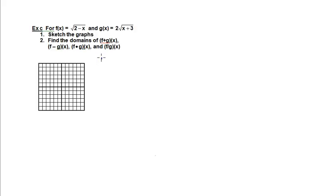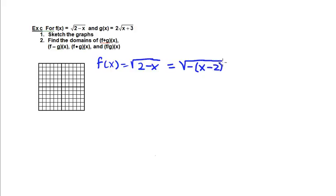For our first function f of x equals square root of 2 minus x, we need to transform this. First, factor out the negative sign inside so it becomes the square root of negative times x minus 2. This radical function is going to be flipped to the left and also shifted 2 units to the right. Imagining the original square root function flipped and shifted 2 units right, we can draw the function.